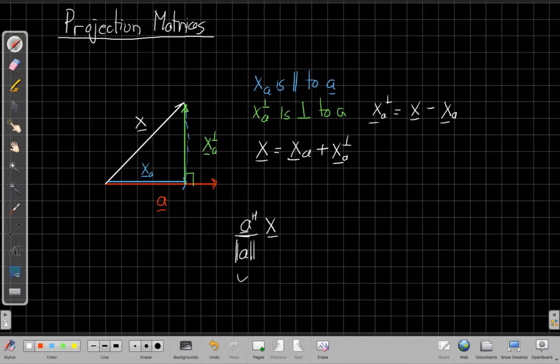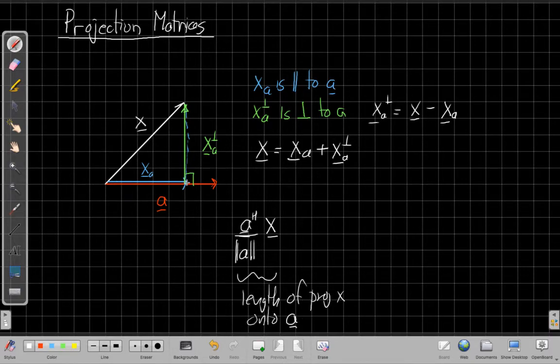So when I do it this way, this is the length of the projection of x onto a. And then if I want to actually have the vector of doing that projection, I say well I would take this length and scale the unit vector by that. Since this is all a scalar, I can put it at the end here.